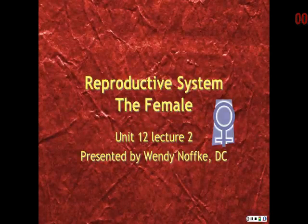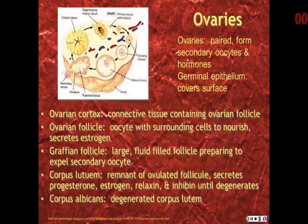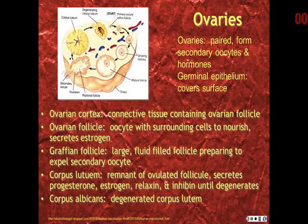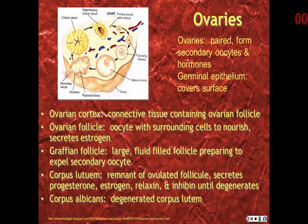This is the second lecture in the reproductive system, covering the female. The ovaries are the female gonads; they are paired and form the secondary oocytes and hormones. The surface is covered with germinal epithelium, and below the germinal epithelium is the ovarian cortex, made of connective tissue containing the ovarian follicles.